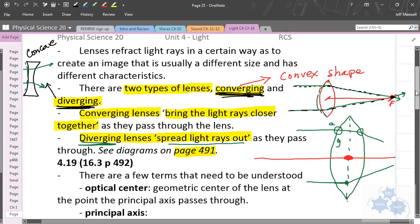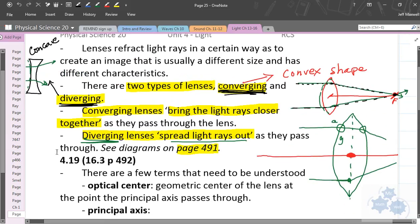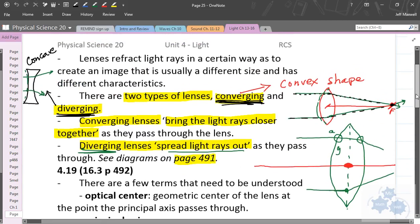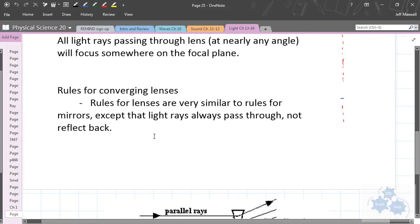There's your short introduction to lenses. That's 16.1 to 3. Some diagrams. I would encourage you to read over that. And we'll talk about rules for converging lenses. That's going to be our next lesson right here.